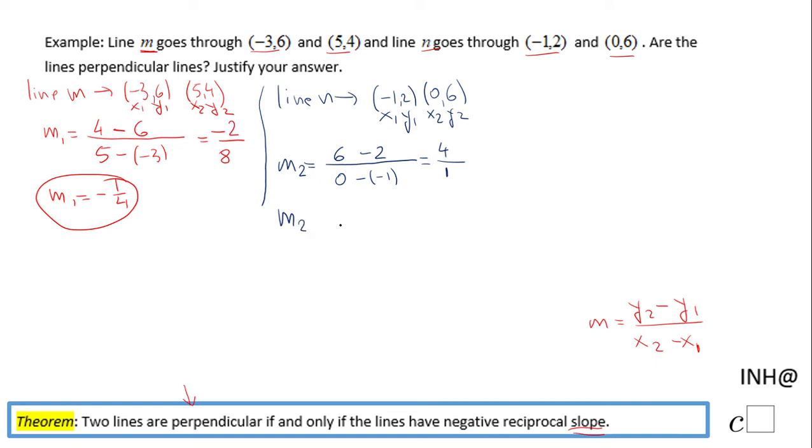So the slope of line N which I call M2 will be 4 over 1 or just 4. So now after we find the slope we really have to look if these two slopes are negative reciprocal.